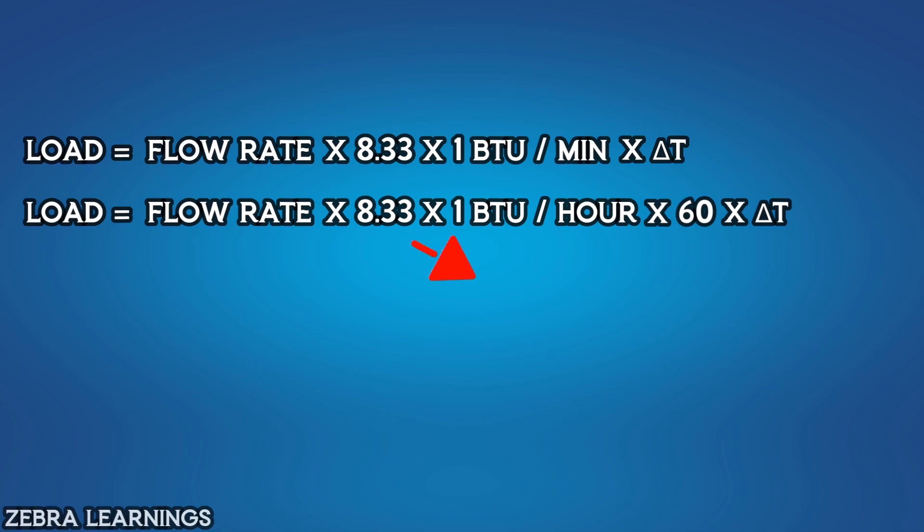When we multiply 8.33 and 60, we get approximately 499.8. We can round this to 500.